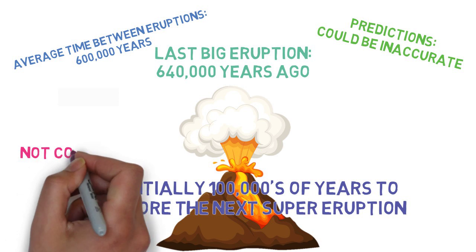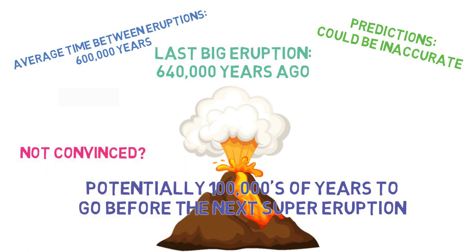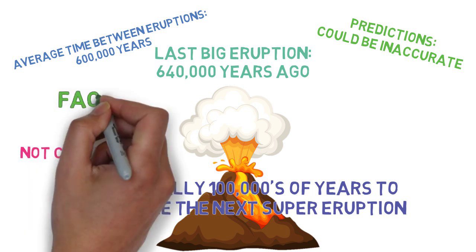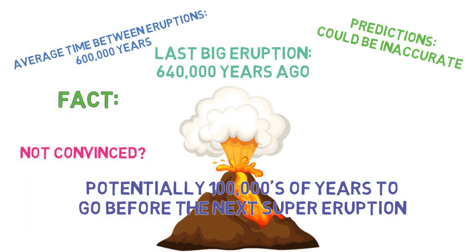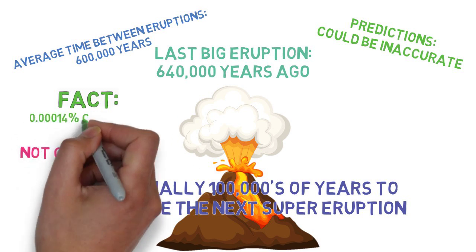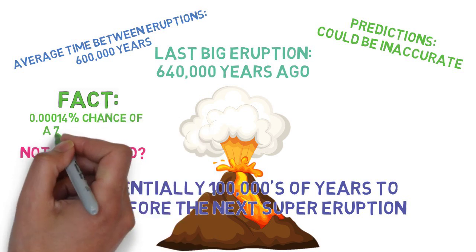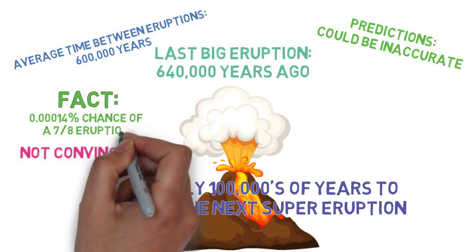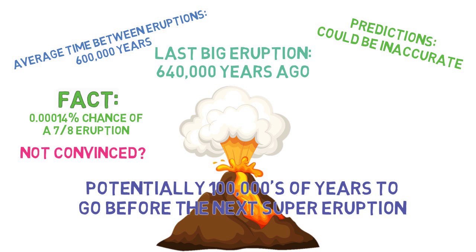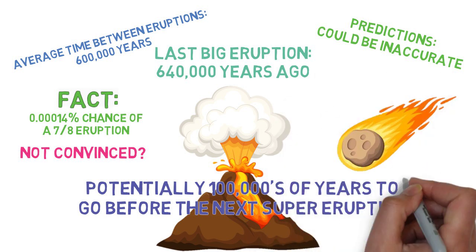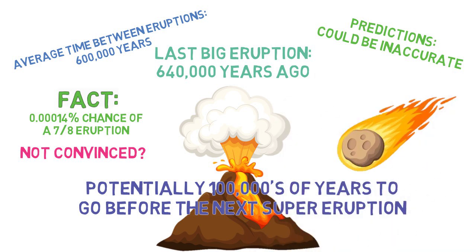If you're still not convinced that you're most likely safe from the supereruption wiping out humanity, we have one last fact for you. According to various sources, the odds of Yellowstone having another eruption of magnitude 7 or above in any year are only 0.00014%. In other words, we are more likely to get hit by an asteroid which can wipe us out entirely. But that's a topic for another video.